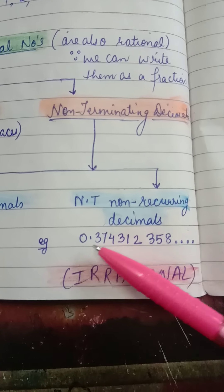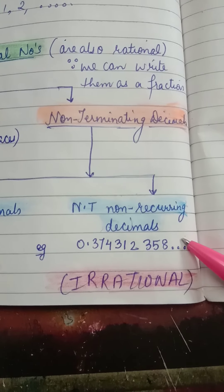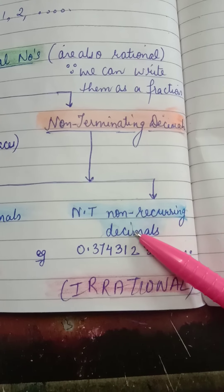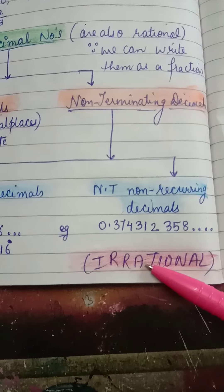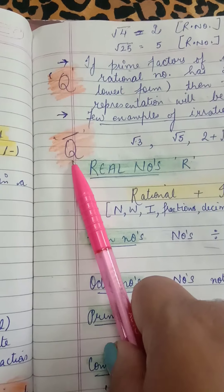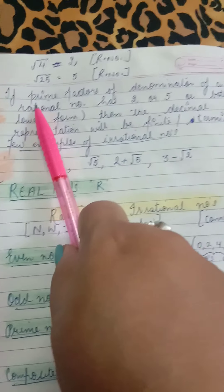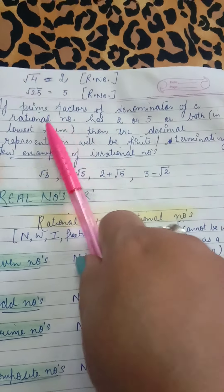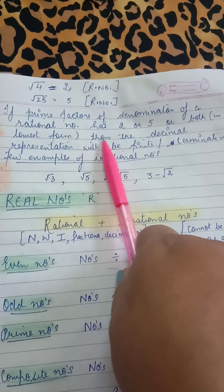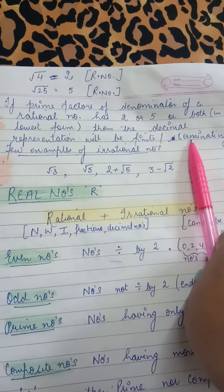All non-terminating repeating decimals are rational numbers. In non-terminating non-recurring decimals, you can see digits repeat but the order is not the same — these are irrational numbers. Rational numbers are denoted by Q and irrational numbers by Q with a bar. If the prime factors of the denominator of a rational number in its lowest form contain only 2 or 5 or both, then its decimal representation will be terminating.